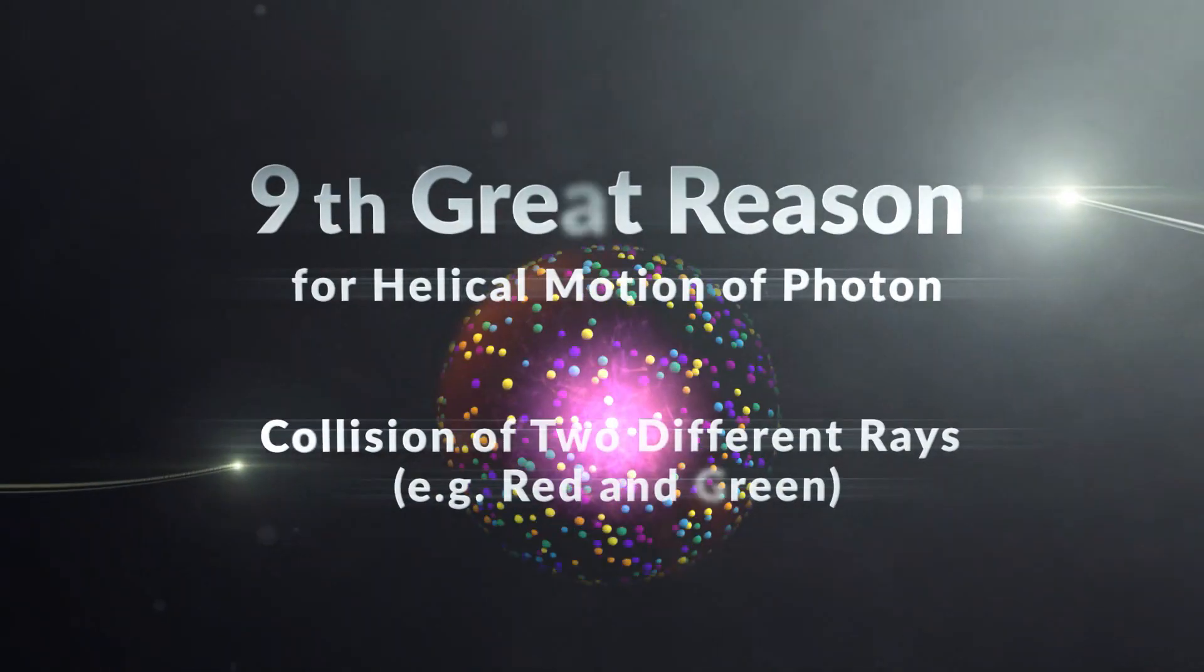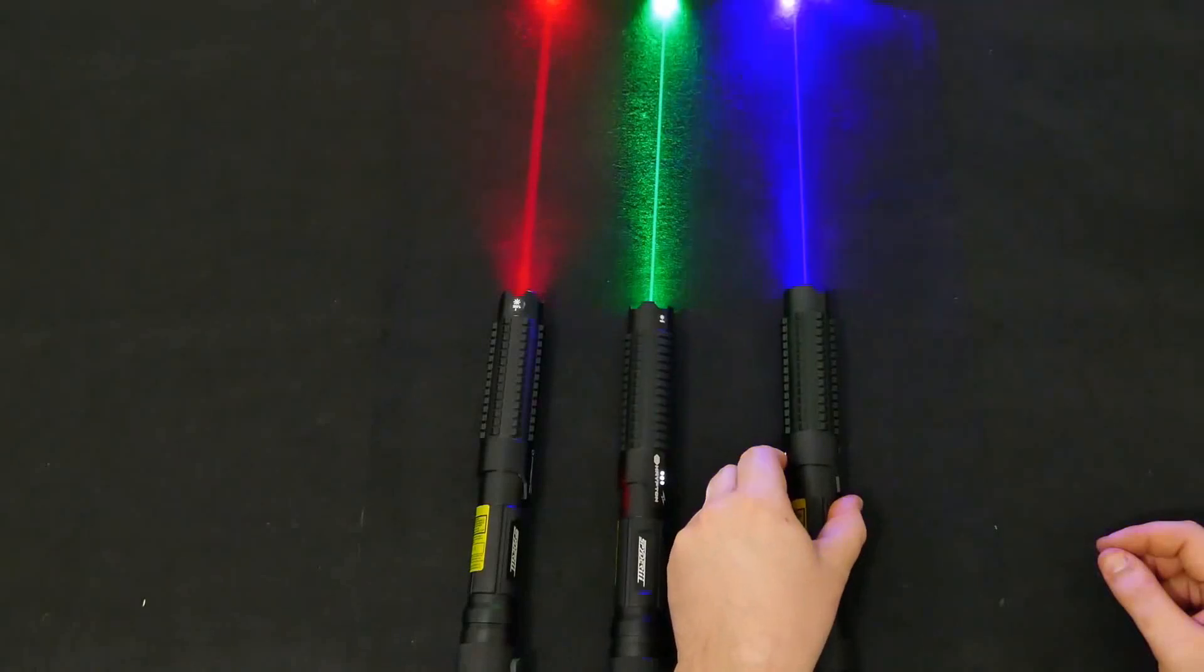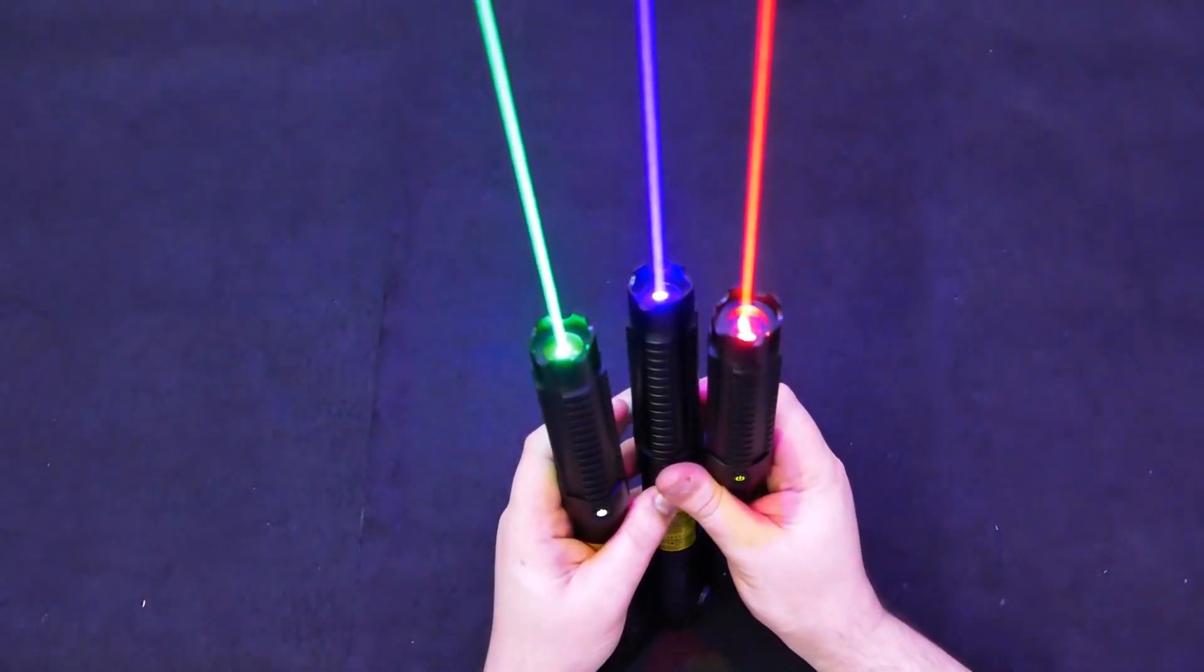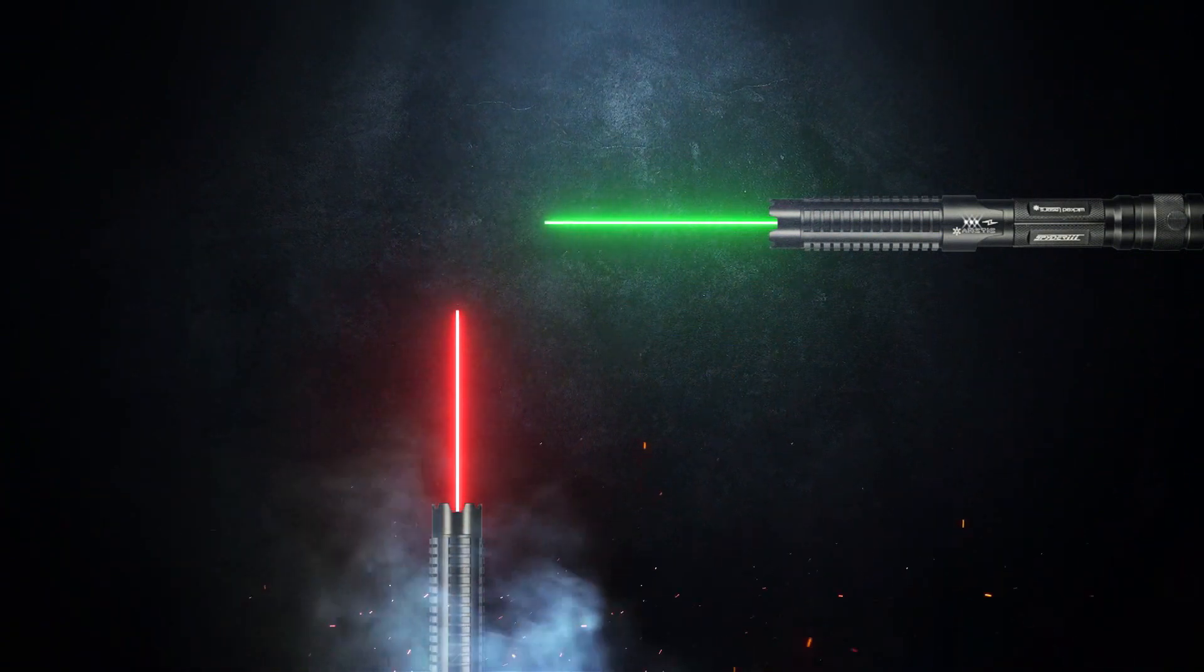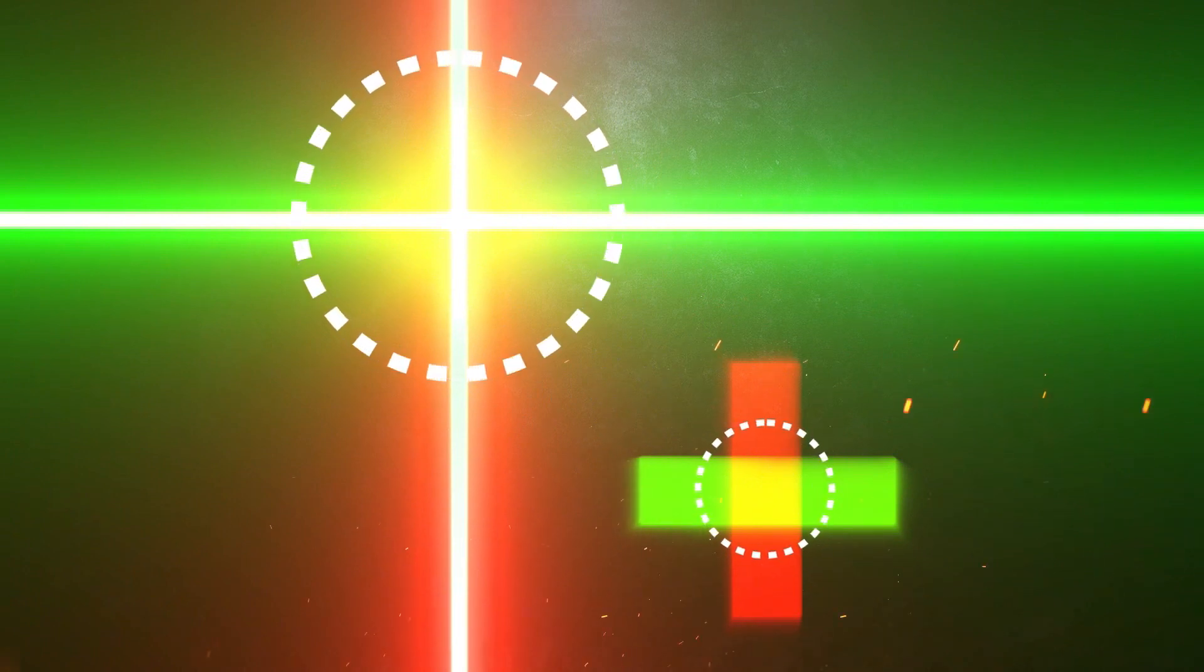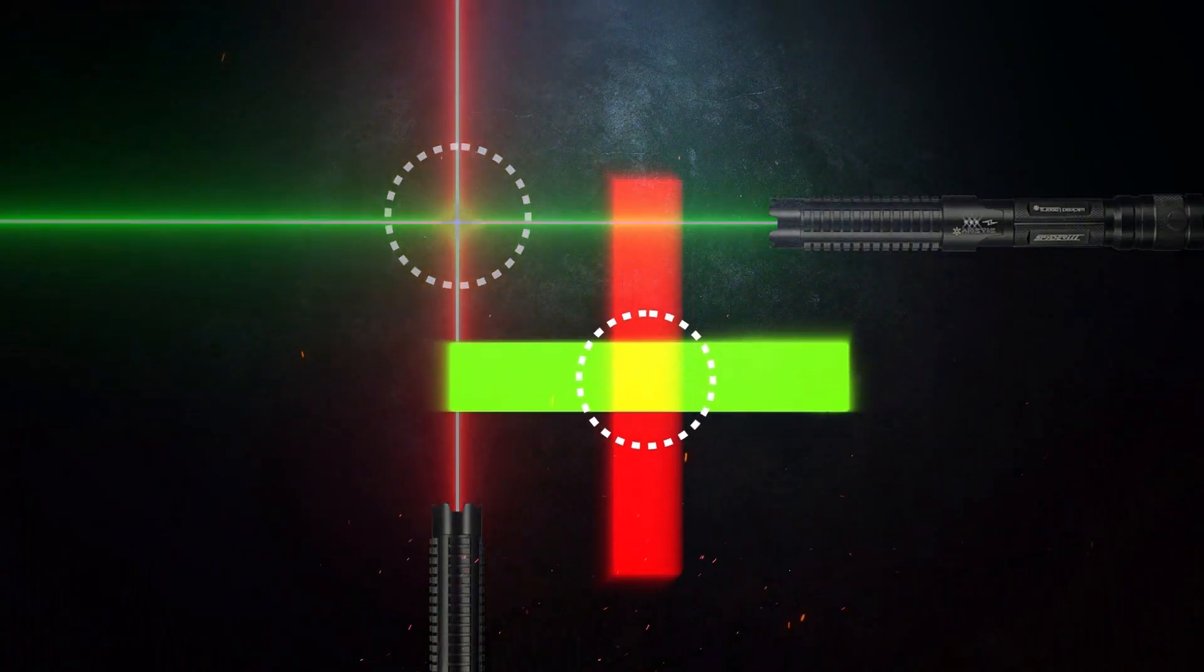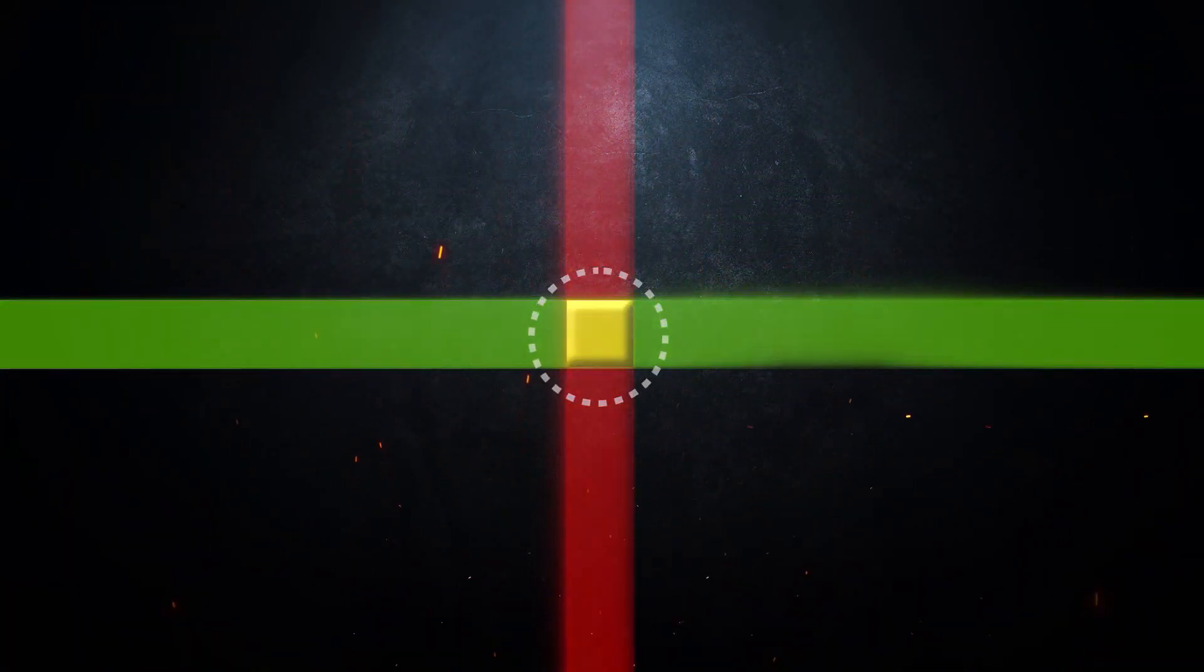9. Collisions of two different rays, i.e. red and green. According to wave-particle theory, it is believed that when two different photons, like red and green ones, collide with each other, a new photon, yellow, will be created. The mass of which is not the sum of the two original masses, but it is their average. And more interestingly, this new photon has average energy and not total energy.